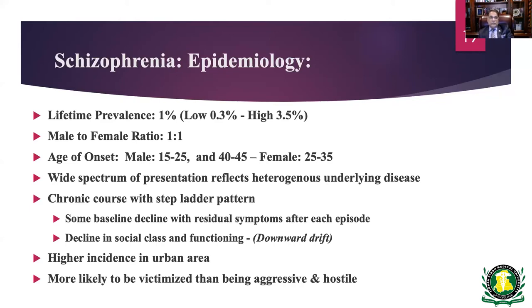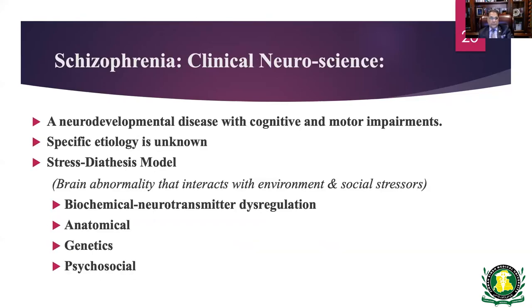Schizophrenic patients are erroneously considered aggressive — they are not. They are more prone to become victims because of their presentation, cognitive dysfunction, and delayed information processing. Schizophrenia is a neurodevelopmental disease with cognitive and motor impairment. The definite etiology is unknown, but models include biochemical neurotransmitter dysregulation, anatomical changes in the ventricles, genetic components, psychosocial stressors, environmental factors, and viral infections during pregnancy.